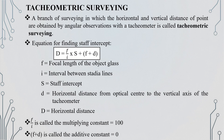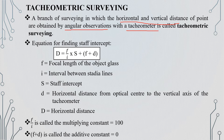Next, we will look at tacheometric surveying. Tacheometric surveying is a branch of surveying in which the horizontal and vertical distances of a point are obtained by angular observations with the tacheometer. We use a tacheometer instrument to make angular observations.